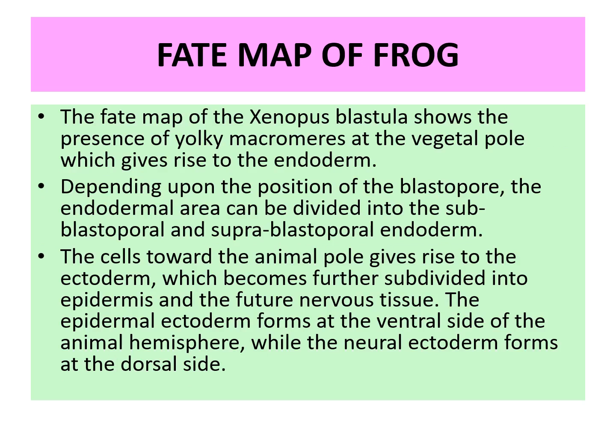The fate map of Xenopus, that is frog blastula, shows the presence of yolky macromeres at the vegetal pole which give rise to endoderm. Depending upon the position of the blastopore, the endodermal area can be divided into sub-blastoporal and supra-blastoporal endoderm. The cells towards the animal pole give rise to the ectoderm, which becomes further subdivided into epidermis and future nervous tissue. The epidermal ectoderm forms at the ventral side of the animal hemisphere, while the neural ectoderm forms on the dorsal side.